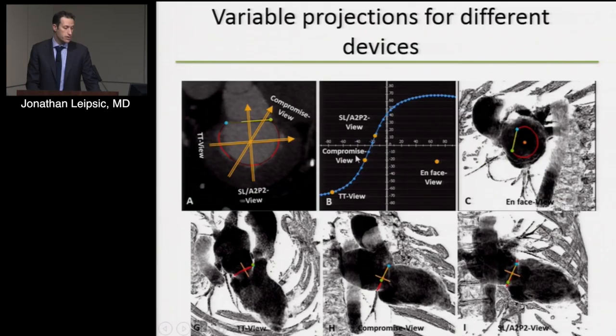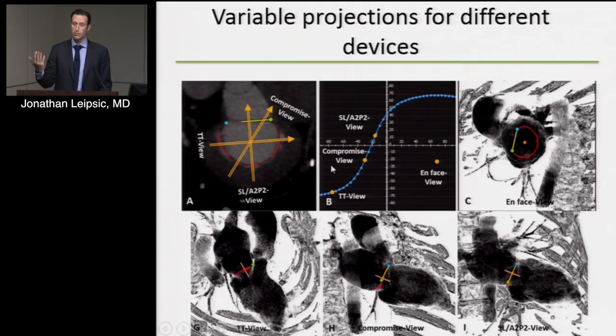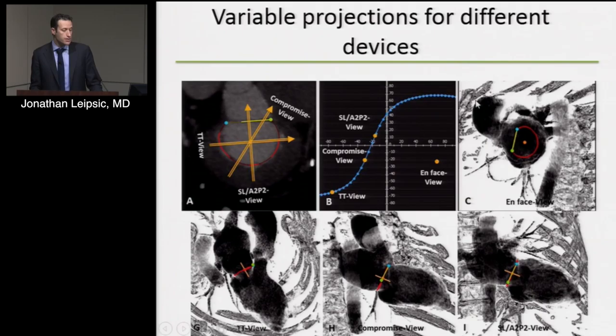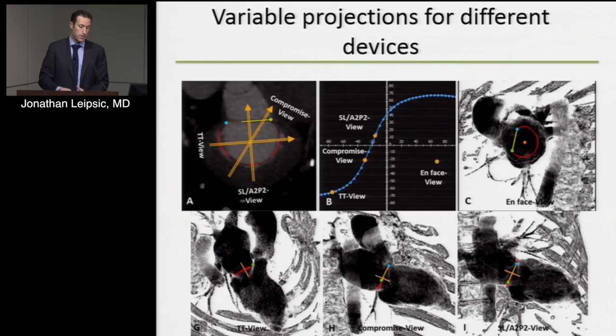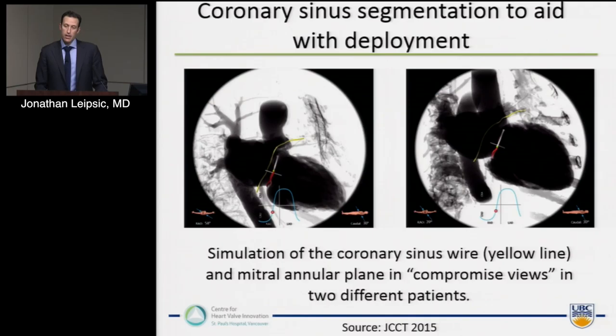What we do is provide a compromised view, typically RAO 25, which is the acceptable threshold our proceduralists feel comfortable with, and provide the corresponding caudal tilt angle allowing coplanar projection of the mitral annulus. We also provide an en-face view — typically well off the line of coplanarity for the mitral annulus — but allowing the proceduralist to angle along a plane that provides a perpendicular trajectory towards the mitral annulus, mimicking this en-face projection. We also segment the coronary sinus.